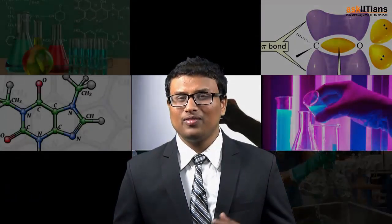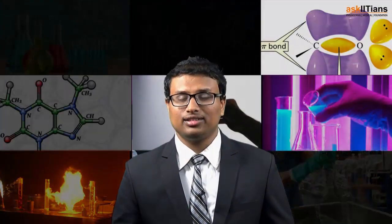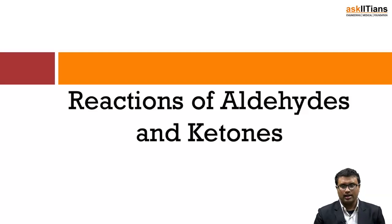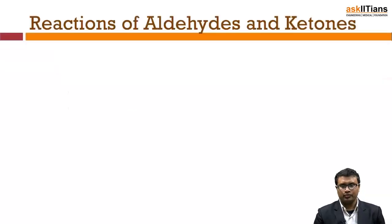Hi students, welcome back. I hope you are doing good. So till the previous part, we were able to prepare an aldehyde and ketone using different techniques. Now, how can we prepare different alcohols or carboxylic acids using the same aldehydes and ketones? In this part, you will be learning about the different chemical properties of aldehydes and ketones. Let's start with the reactions of aldehydes and ketones.